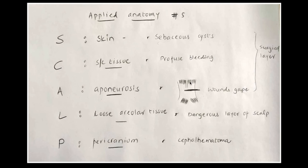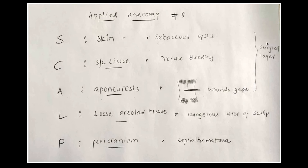The third layer, galea aponeurotica, has two frontal and two occipital bellies oriented anteroposteriorly. A wound in the anteroposterior direction won't gap, but a wound across the long axis will tend to gap. Collectively, the first, second, and third layers are fixed to each other, do not separate, and are termed the surgical layer of the scalp.